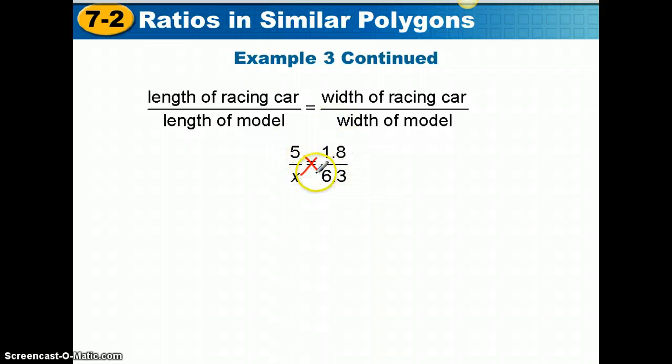Remember, to solve proportions, we set the cross-products equal. We're going to say that 5 times 6.3 equals 1.8 times X. So we're going to start by simplifying 5 times 6.3, which is 31.5.